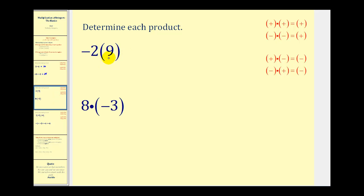Here we have negative two times positive nine. And if the signs are different, the product is negative. Or we can also refer to the rule that says a negative times a positive is negative. Either way, the result is negative eighteen.